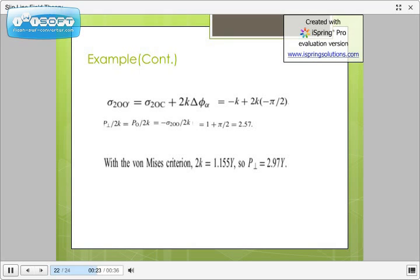Now, with von Mises criteria, 2k equals 1.155 Y. So, P perpendicular equals 2.97 Y. So, P perpendicular is approximately equal to 3 times the yield strength.